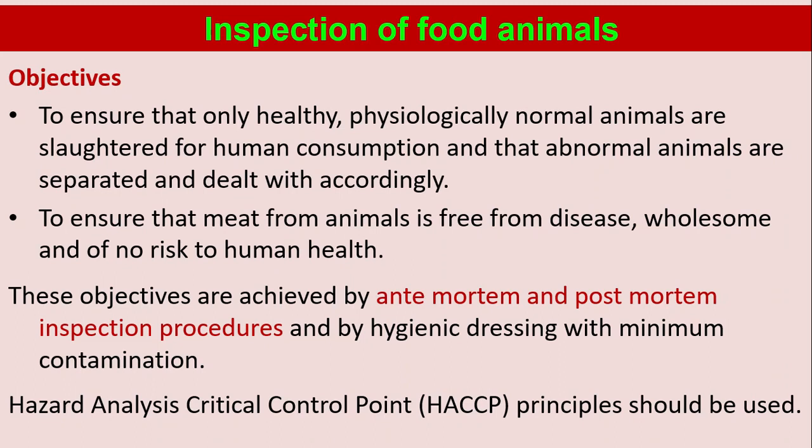The objectives are to ensure that only healthy, physiologically normal animals are slaughtered for human consumption, and that abnormal animals are separated and dealt with accordingly. We also aim to ensure that meat from animals is free from disease, wholesome, and of no risk to human health. These objectives are achieved by anti-mortem and post-mortem inspection procedures and by hygienic dressing.